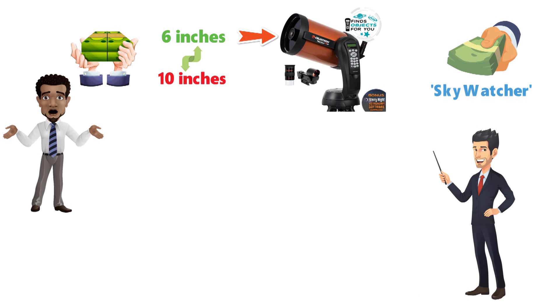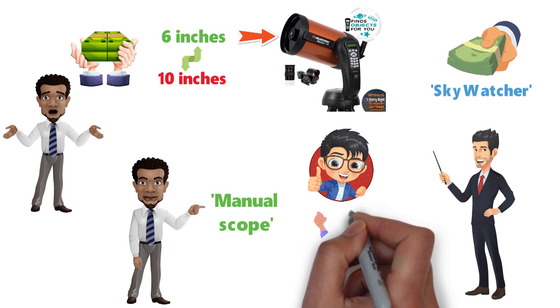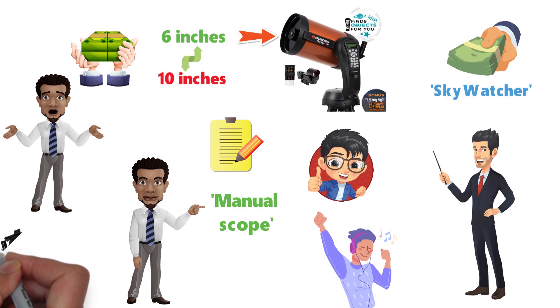I have to mention a computerized scope in here because for some people they may be better. Personally, I would always stick to a manual scope because the hunt is part of the fun. But computerized scopes have their benefits too, and the Nexstar is a solid option.